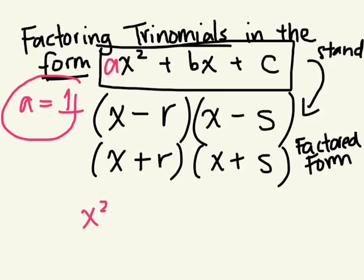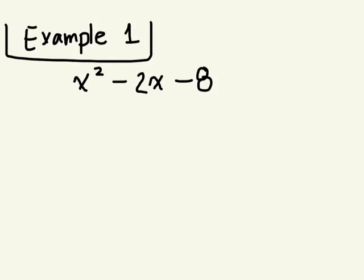So it's going to be in the form X squared plus BX plus C. In this question, what is my B? Negative 2. This is B. And what's C? Negative 8. We know that to factor this, we're looking for two things that multiply together to give us back the answer. Factoring is the opposite of expanding.